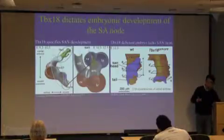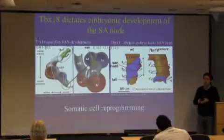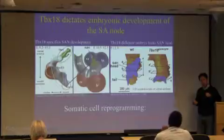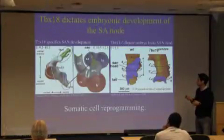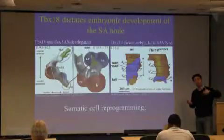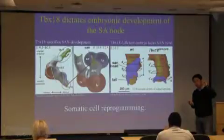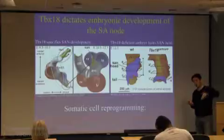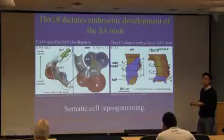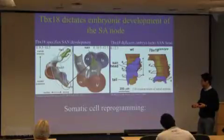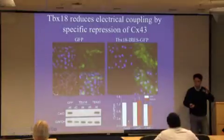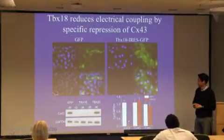Being simplistic scientists, we imagined what would happen if we re-expressed TBX18 in ordinary cardiac myocytes. One thing I didn't mention: TBX18 is so important for forming the SA node structure, but its expression goes away before we are born — a very brief, pulse-like expression during embryonic life. In adult life there is no TBX18. So we imagined that re-expressing this embryonic factor in somatic ventricular myocytes may be able to create pacemaker cells. It was a bold and very simplistic hypothesis. Fortunately, it actually worked.